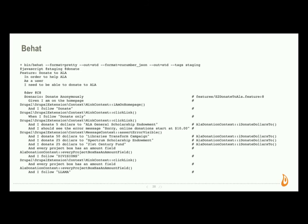BHAT uses the Gherkin language — it's easy to read, it's available from inside your Jenkins console, and it reads out the scenarios. You can see every time a test runs, and even if you're not working on that piece of the project and it breaks, you're going to get a failure notification and you'll know about it.